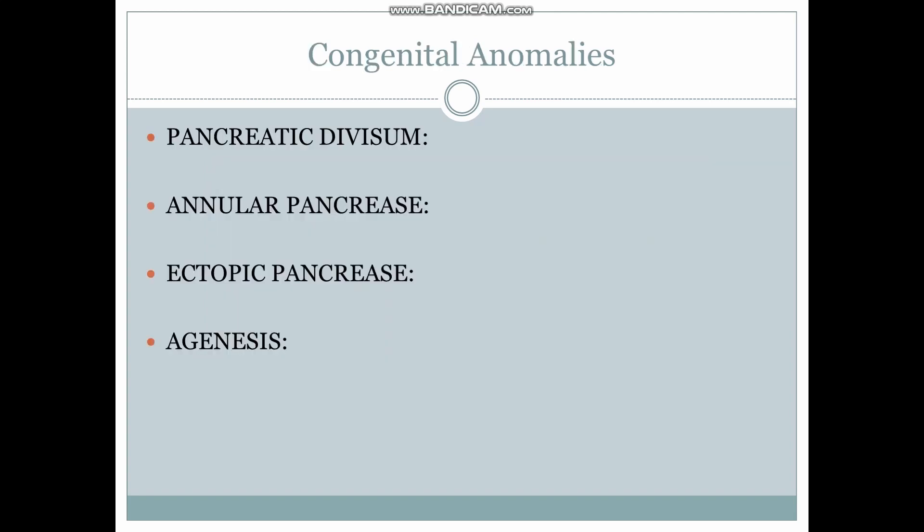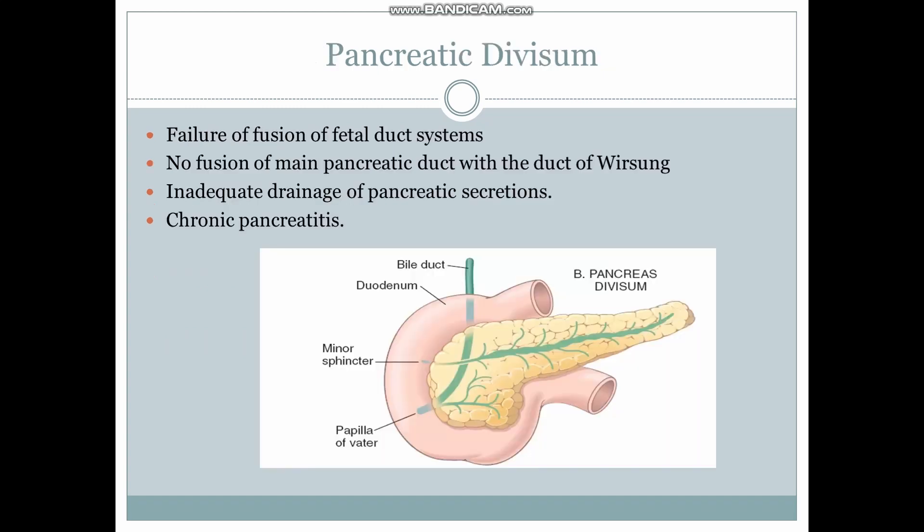There are four congenital anomalies most likely to be asked in the exam. The first is pancreatic divisum, then annular pancreas, then ectopic pancreas which means the pancreas is located outside of its normal location, and then agenesis which is the complete absence of the pancreas.